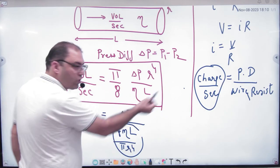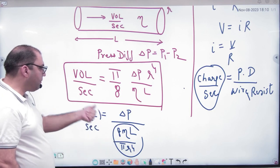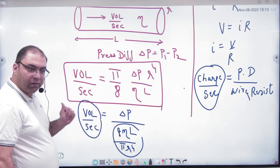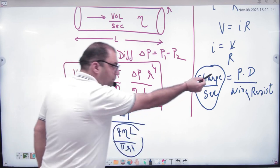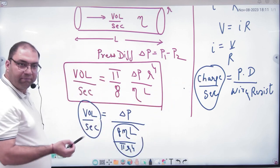So as electricity has charge flowing per second, here volume flowing per second. Compare it. Here potential difference and here pressure difference.